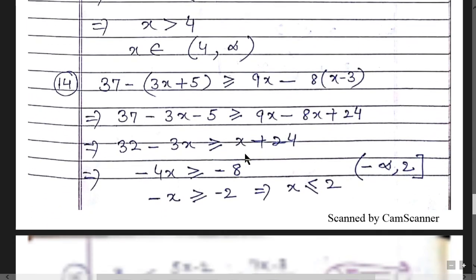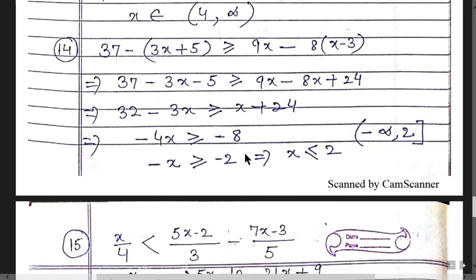Question 14: 37 - 3x ≥ ... Simplifying: 9x - 8x + 24 = x + 24 and 32 - 3x. Combining gives -4x and 24 - 32 = -8, so -x ≥ -2, meaning x ≤ 2. The interval is (-∞, 2], with a square bracket due to the equality sign.